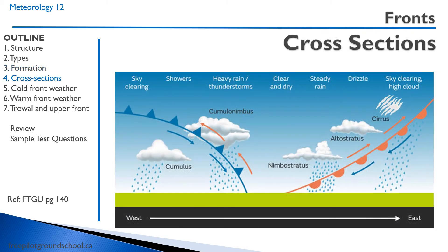Here's a cross-section of a couple of fronts. The first one is a cold front. We would have cold air advancing on warm air — we'll call it H for hot over here. As it forces its way underneath, it pushes up the hot air, creating unstable air.